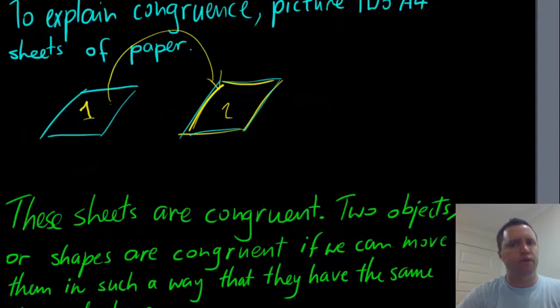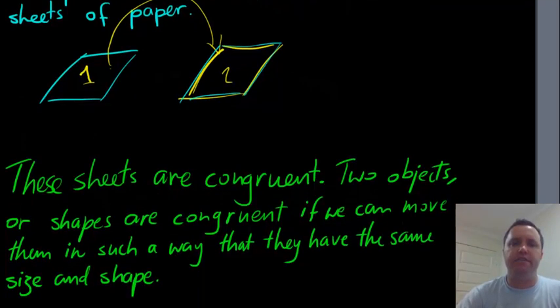Now, it's a weird word, maybe you've heard it before, but what it means is, two objects or shapes are congruent if we can move them in such a way that they have the same size and shape.